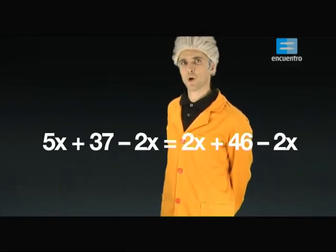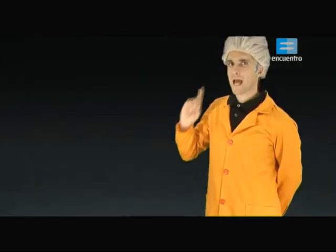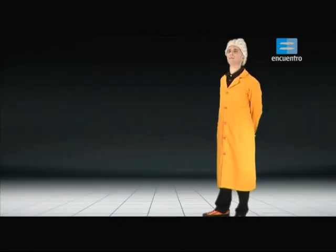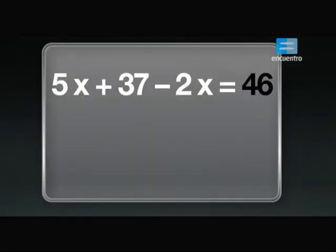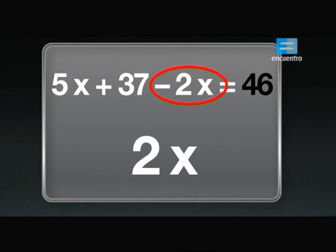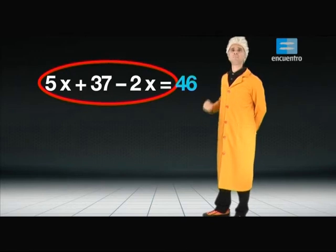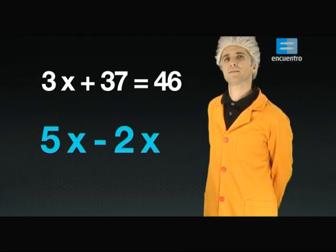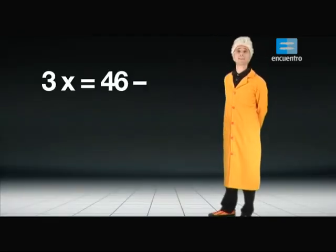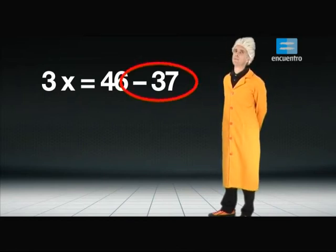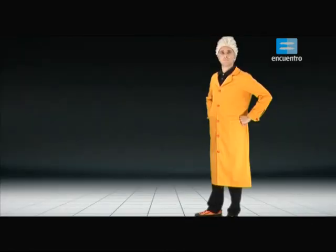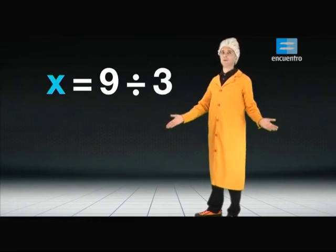Repasemos la resolución tomando en cuenta estas reglas. La secuencia sería: 5X más 37 igual 2X más 46 (ecuación inicial); 5X más 37 menos 2X igual 46 (2X se agrega restando al primer miembro y se elimina del segundo); 3X más 37 igual 46 (resolución de cuentas); 3X igual 46 menos 37; 3X igual 9; X igual 9 dividido 3; X igual 3.